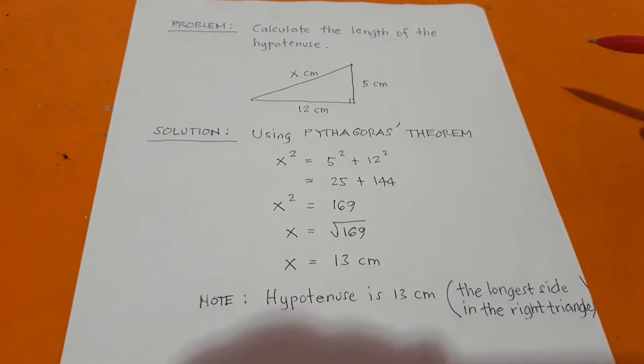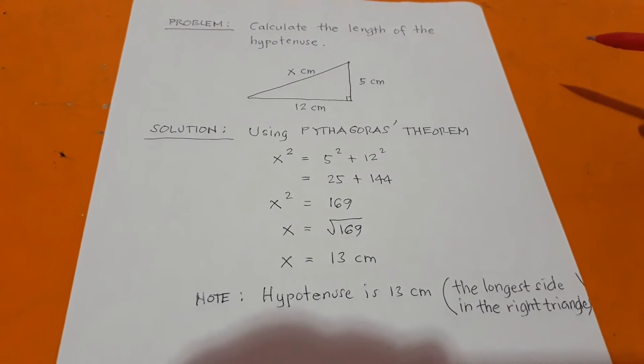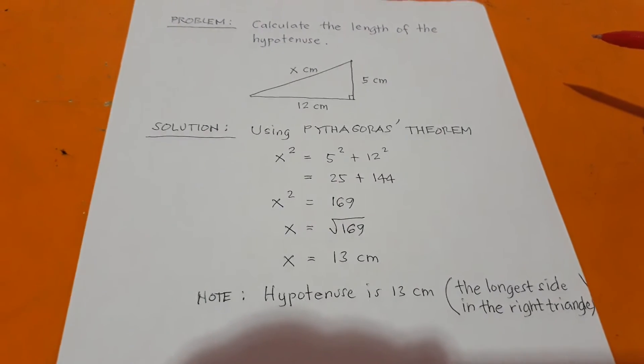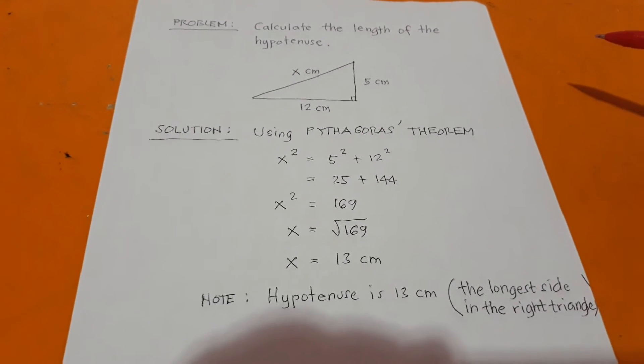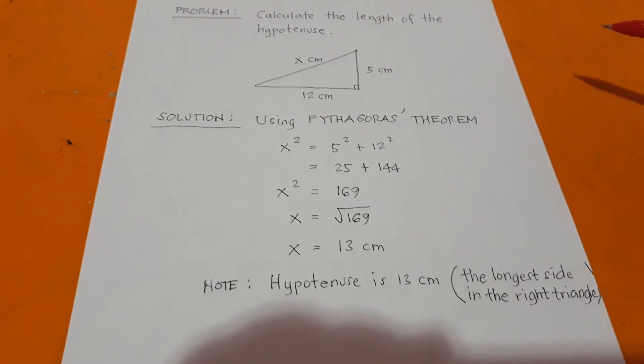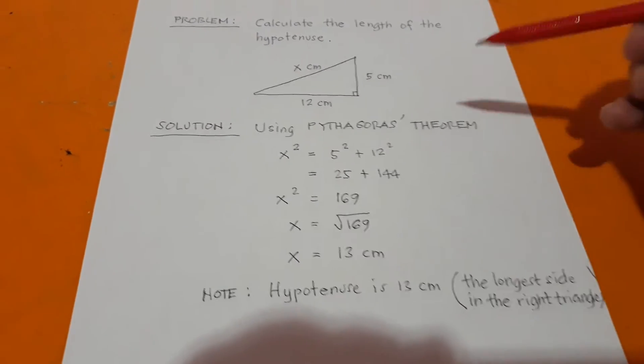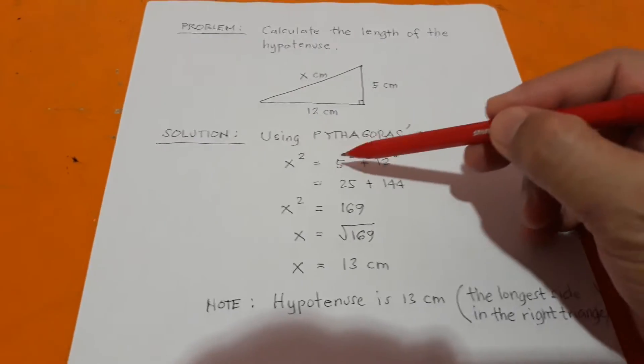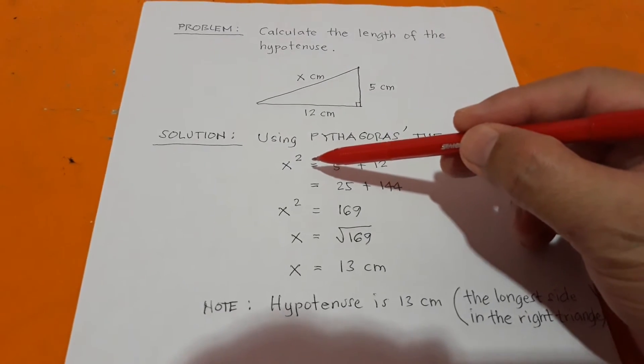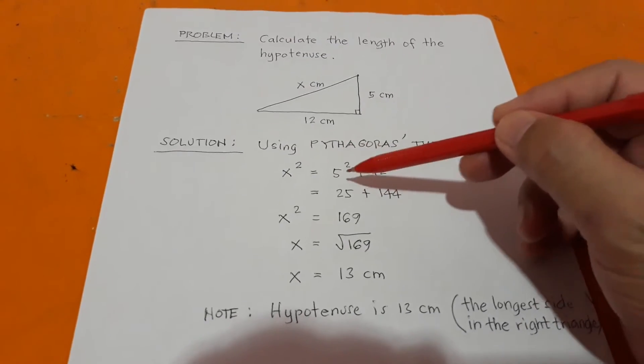Pythagoras' Theorem states that in a right triangle, the square of the hypotenuse is equal to the sum of the squares of the other two shorter sides. So therefore, using Pythagoras' Theorem, you have x squared (hypotenuse) is equal to the sum of the other two shorter sides.